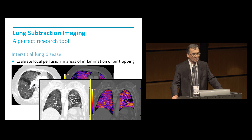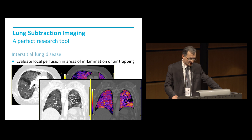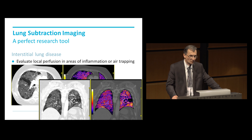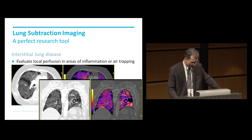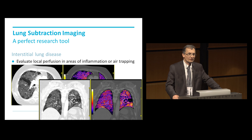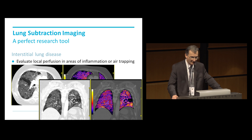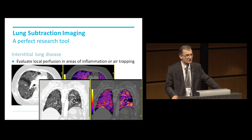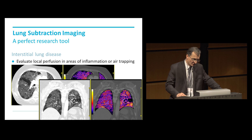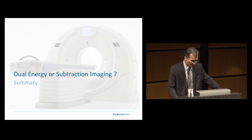We can also use this technique for interstitial lung disease. In this particular patient with extrinsic allergic alveolitis, you can see an area with a complete cut-down of perfusion — an area typical for air trapping where there's actually no enhancement. You also see other areas with hyper-enhancement in these patients, which could give us chances of looking at areas of disease activity. I think it's a really interesting research tool to look at.